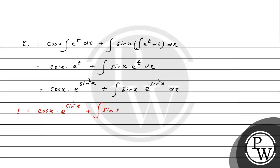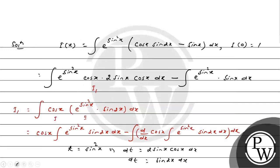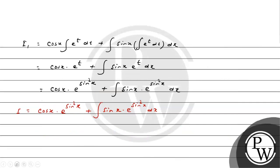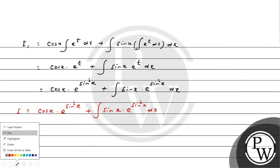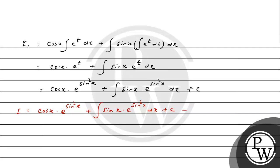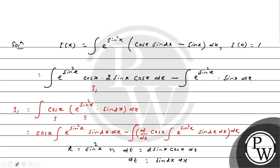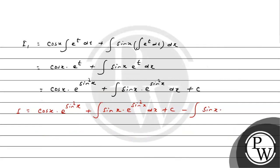Putting the value of I1 back into I(x), we get cosx · e^(sin²x) plus ∫sinx · e^(sin²x) dx, minus ∫sinx · e^(sin²x) dx. The two integral terms cancel each other, and finally I(x) = cosx · e^(sin²x) + c.